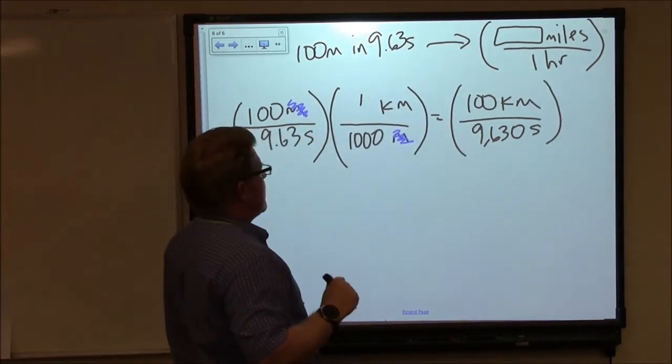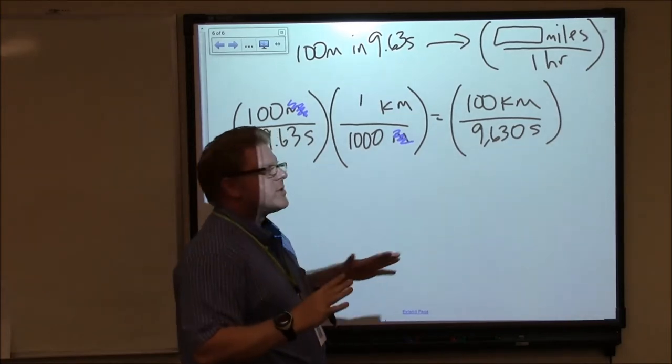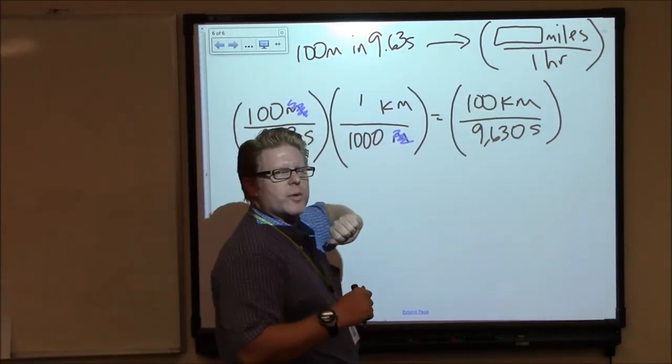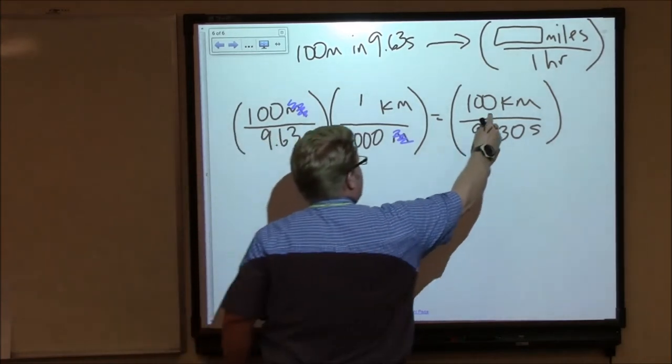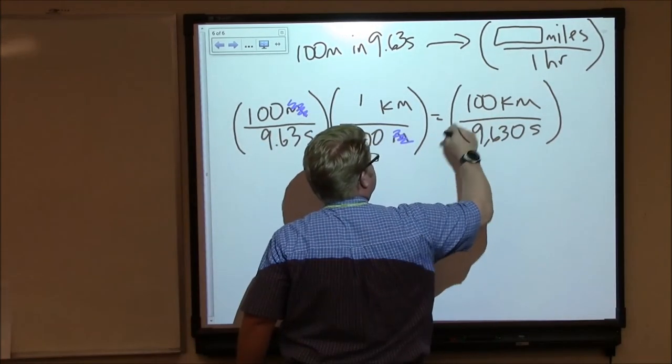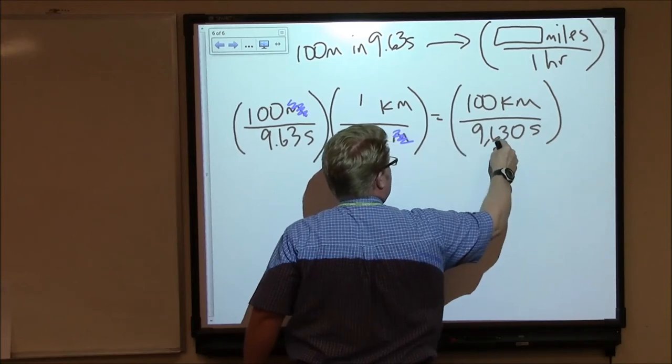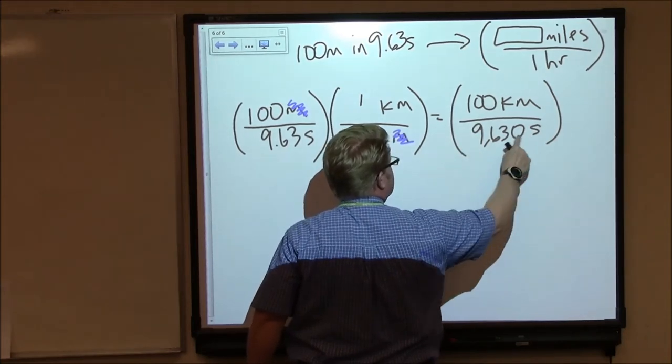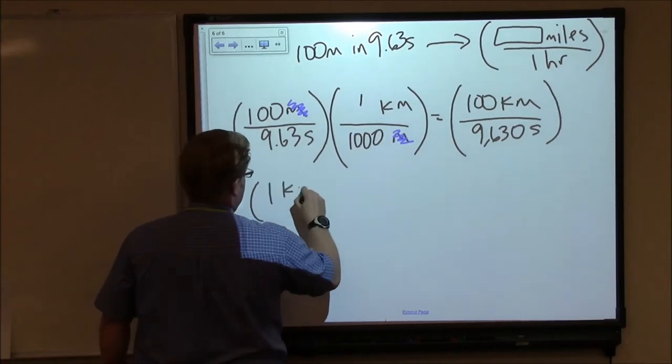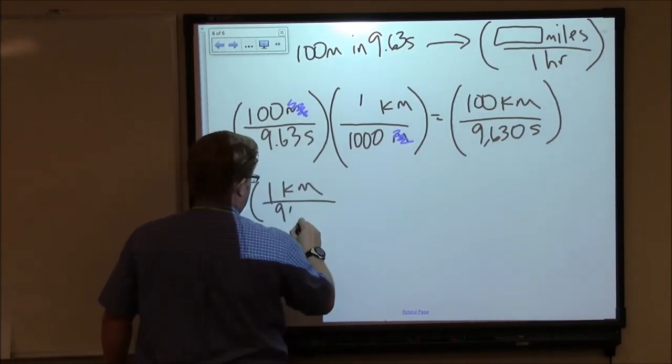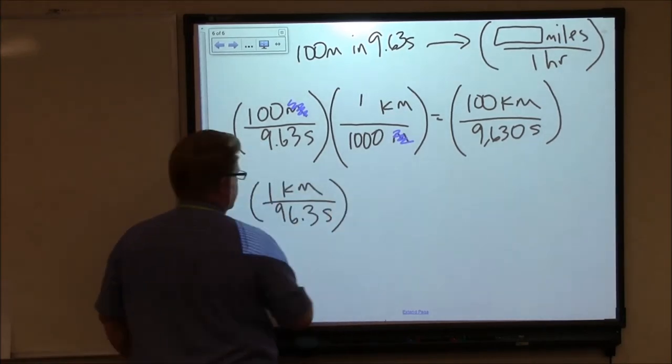Well, that's a big number. I don't know that I want to work with that many digits. So let's see if we can't pare this down a little bit. If I move my decimal place twice to get back to 1 kilometer, then I'll have to move my decimal place twice to get to 96.3 seconds. So I can say 1 kilometer in 96.3 seconds.